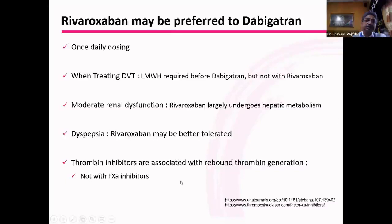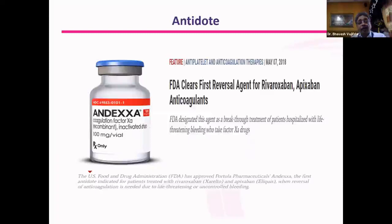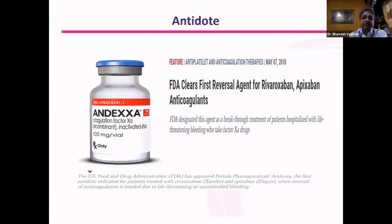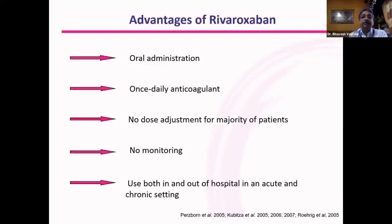There is now an antidote available for rivaroxaban and apixaban also. The antidote for dabigatran costs around 1 lakh rupees — very expensive. The antidote for rivaroxaban and apixaban is unfortunately prohibitively expensive and not currently available in India; by US cost, it would be more than 25 lakhs for one dose. Probably in the future it will be available at a lower cost. These are all the advantages of rivaroxaban over other drugs, and with that I will move on to the next drug.